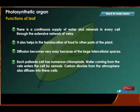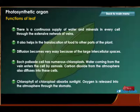Water coming from the vein enters the cell by osmosis. Carbon dioxide from the atmosphere also diffuses into these cells. Chlorophyll of the chloroplast absorbs sunlight, and oxygen is released into the atmosphere through the stomata.